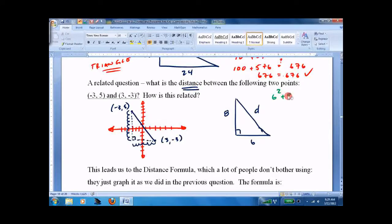6 squared plus 8 squared equals d squared. 36 plus 64 equals d squared. 100 equals d squared. d equals 10. And that's called the distance formula.